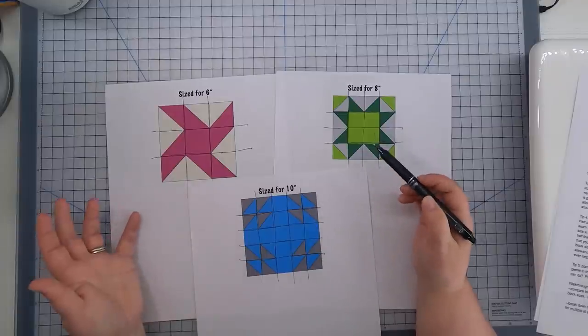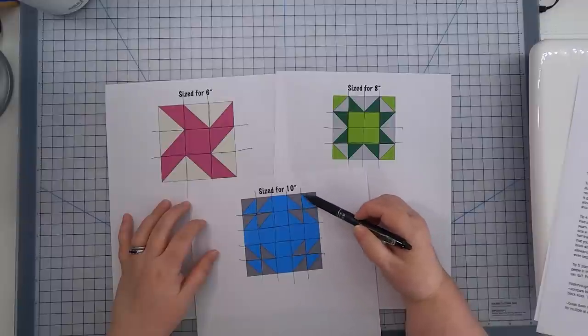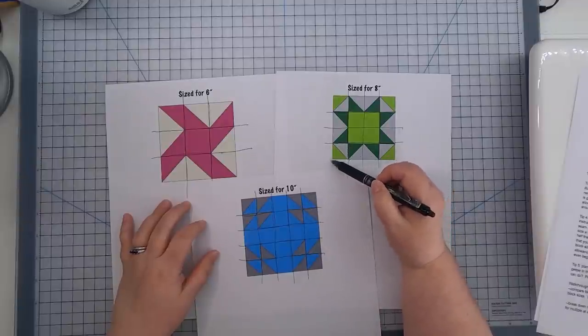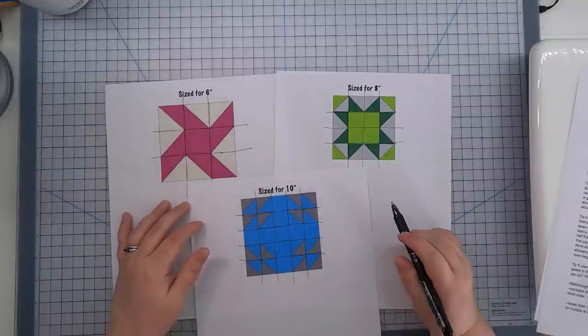So when you're trying to decide what the grid system of a block is, then looking at the smallest components are usually going to be your best bet at figuring that out. For all of these blocks, it was all these little half square triangles. Here, it was this unit. Here, it was this unit. And here, it was these half square triangles. So once you've identified the grid system of your block, we can go back to that tip number one, which is to avoid stupid math.